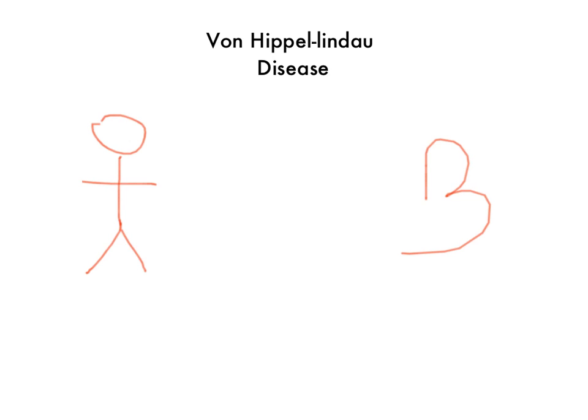In von Hippel-Lindau, you see hemangioblastomas of the retina, cerebellum, and medulla — all part of the central nervous system.